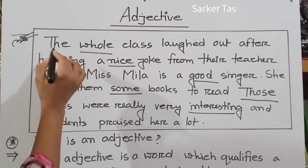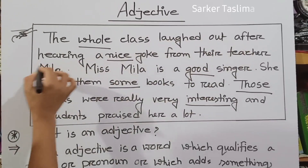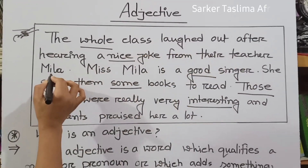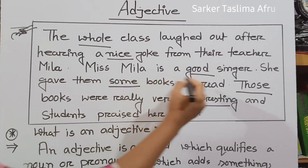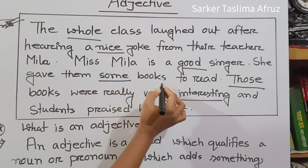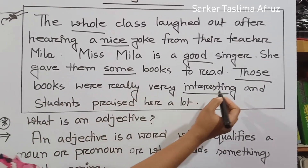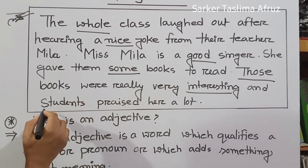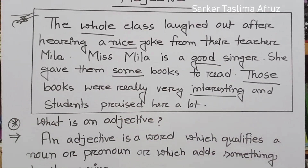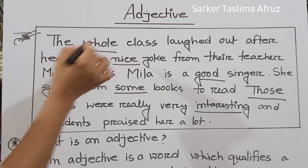As you can see, I have mentioned here some lines, some information about adjectives. Let's start with these lines. 'The whole class laughed out after hearing a nice joke from their teacher Miss Mila. Miss Mila is a good singer. She gave them some books to read. Those books were really very interesting and students praised her a lot.'